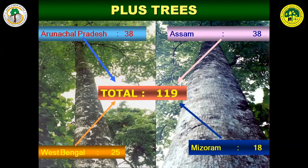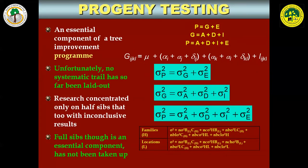Just as an example, from the entire northeast and parts of West Bengal, 119 plus trees of Melia arborea were selected. These plus trees were subjected to various evaluation tests, one of which is a progeny test. Progeny evaluation is a method of evaluating the performance of the parents — it goes the other way round. If the children are not of good caliber, the performance of the parents is not of good quality.